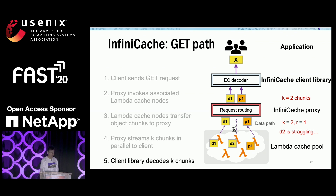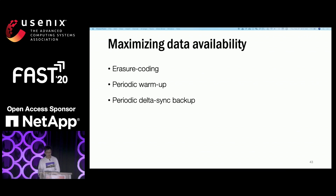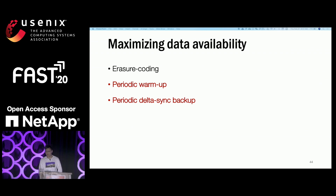In some cases, a chunk like D2 may be lost. After object reconstruction, the client library recovers the D2 chunk and reinserts it to the corresponding Lambda cache node — this is the error code recovery in Infinity Cache. Infinity Cache adopts three intelligent techniques to maximize data availability: error coding, periodic warmup, and periodic delta sync backup. We've discussed how error coding enhances data availability; next I'll focus on the other two techniques.